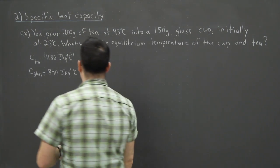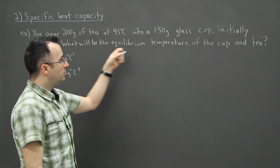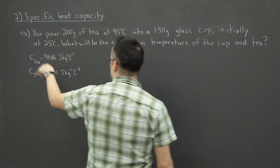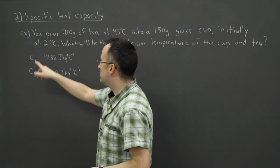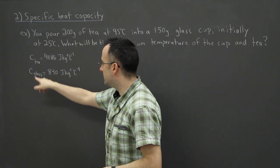So the question is, what will be the equilibrium temperature of the cup and the tea? We're given the specific heat capacities of the tea and the glass. C_tea is 4186 J/(kg·°C), and C_glass is 840 J/(kg·°C).